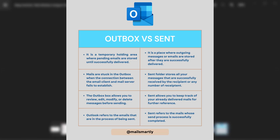The first difference: the outbox is a temporary holding area where pending emails are stored until successfully delivered. It is like a warehouse — when you create an email and are about to send it, or you decide to draft it later, that email will be automatically saved in the outbox until you delete it from the draft. In contrast, the sandbox is a place where outgoing emails are stored after they are successfully delivered — when you send an email to a recipient, a copy is automatically saved in your sent items or sandbox.